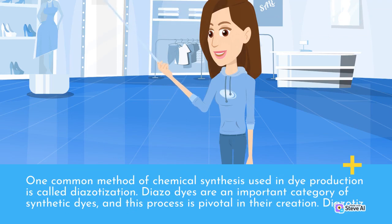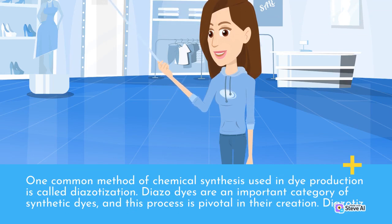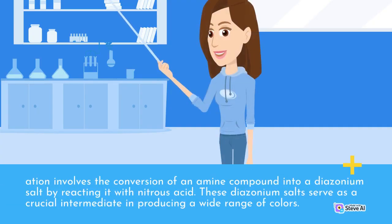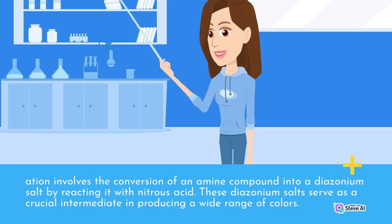One common method of chemical synthesis used in dye production is called diazotization. Diazo dyes are an important category of synthetic dyes, and this process is pivotal in their creation. Diazotization involves the conversion of an amine compound into a diazonium salt by reacting it with nitrous acid. These diazonium salts serve as a crucial intermediate in producing a wide range of colors.